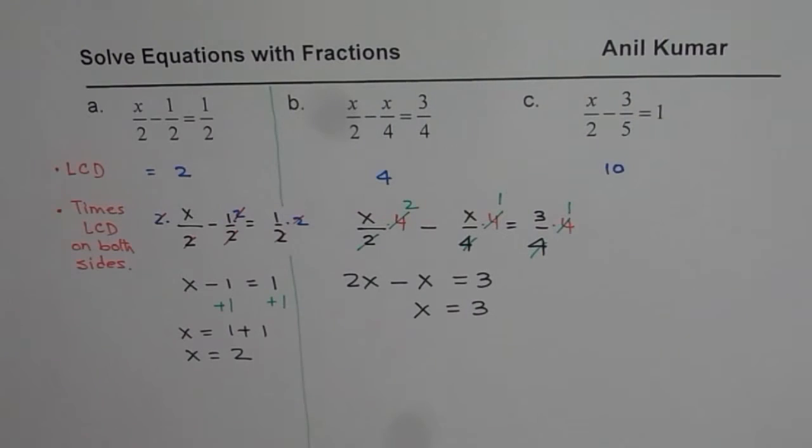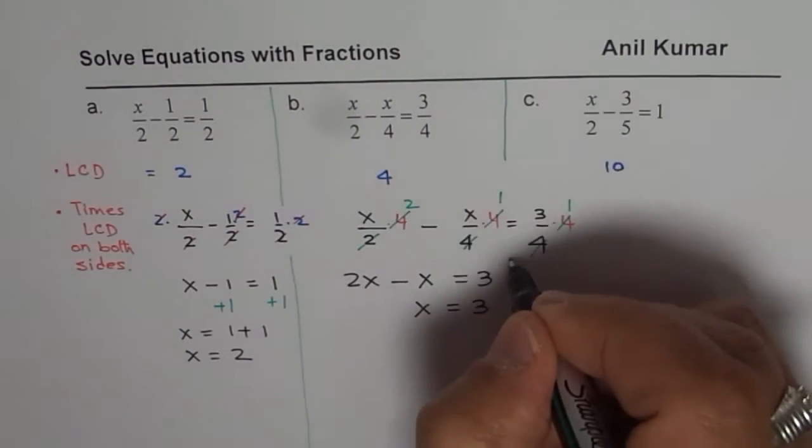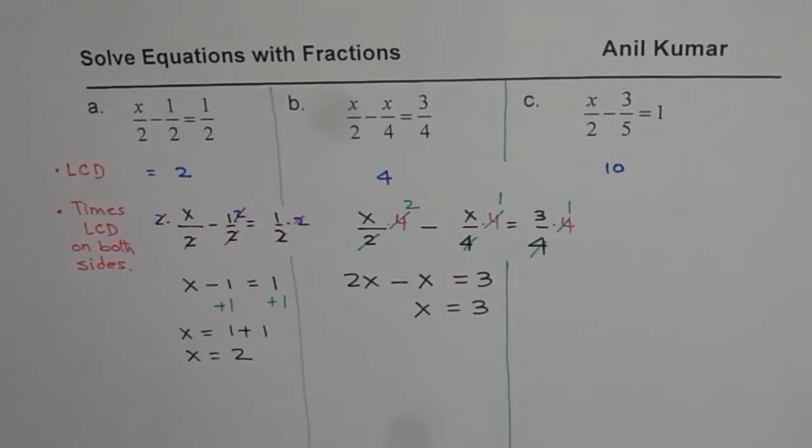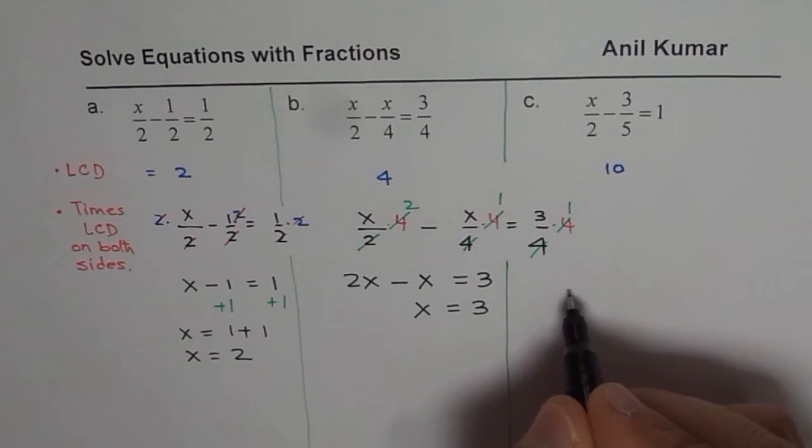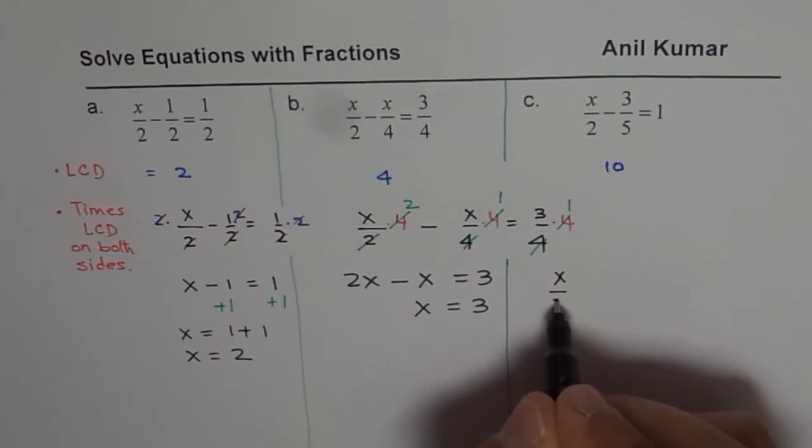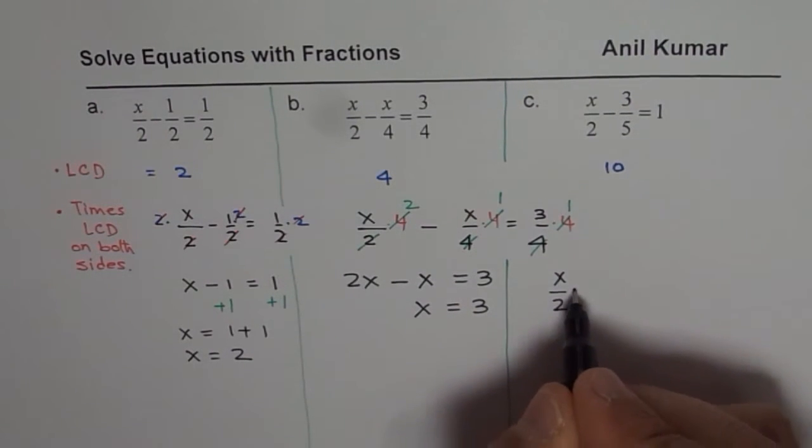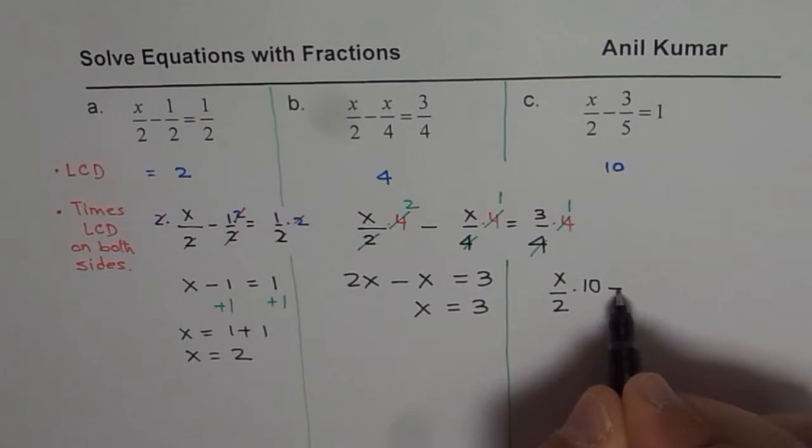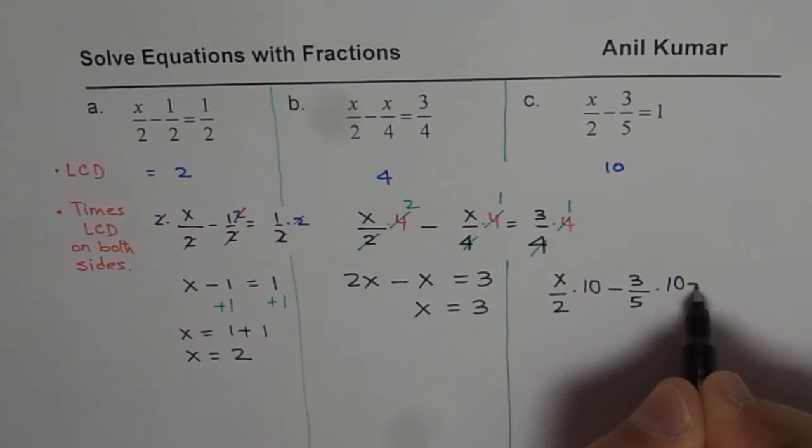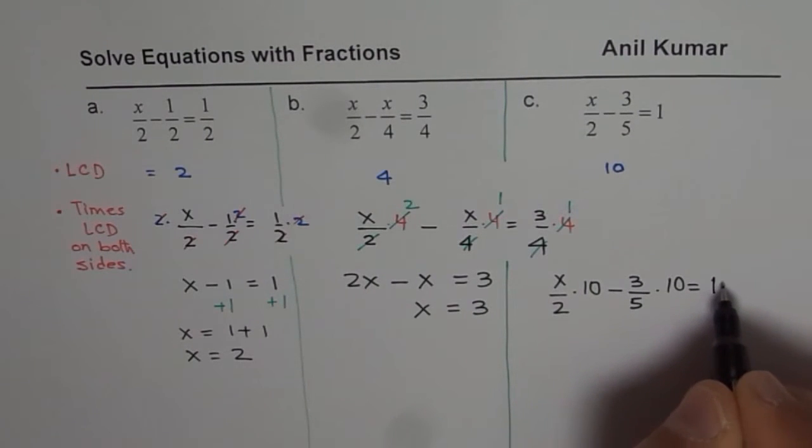Now, here is the last one for you. So in this case, what should you do? You have to multiply each term by 10. So what I will do here is, let me show you this solution in lesser number of steps. So we have equation x over 2. So we will write x over 2 times 10. So we just multiply this by 10. Minus 3 over 5 times 10 equals to 1 times 10.